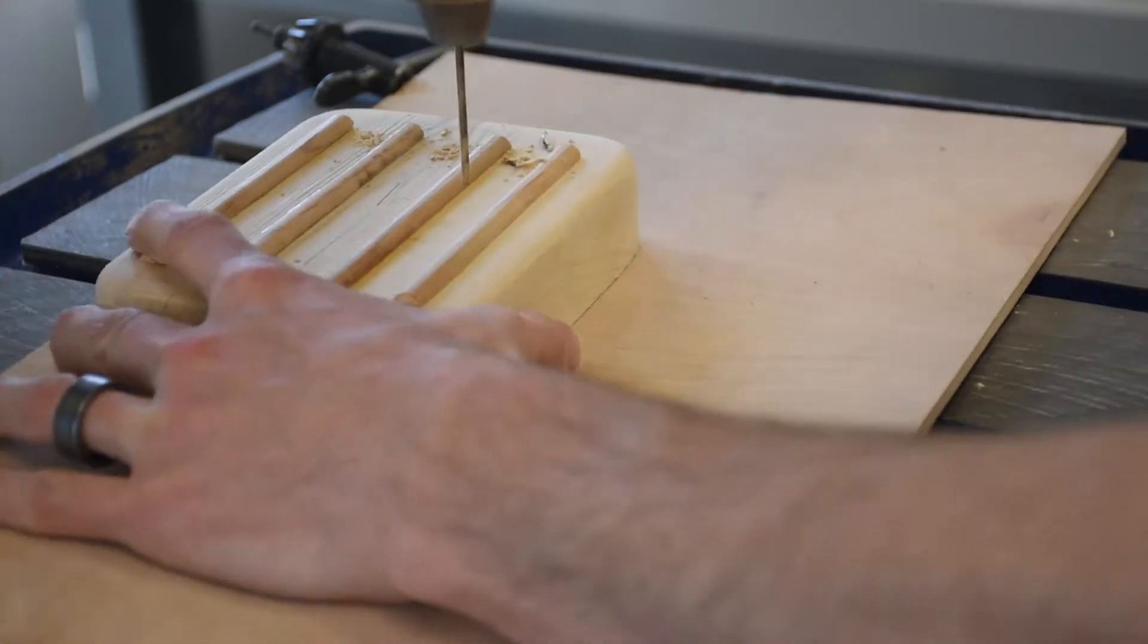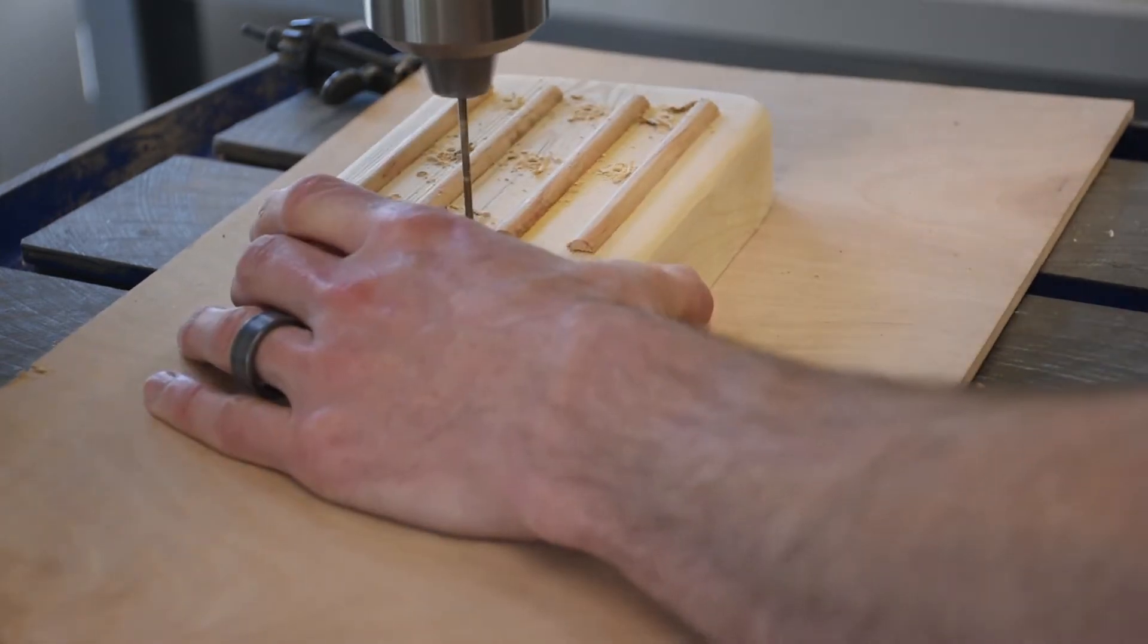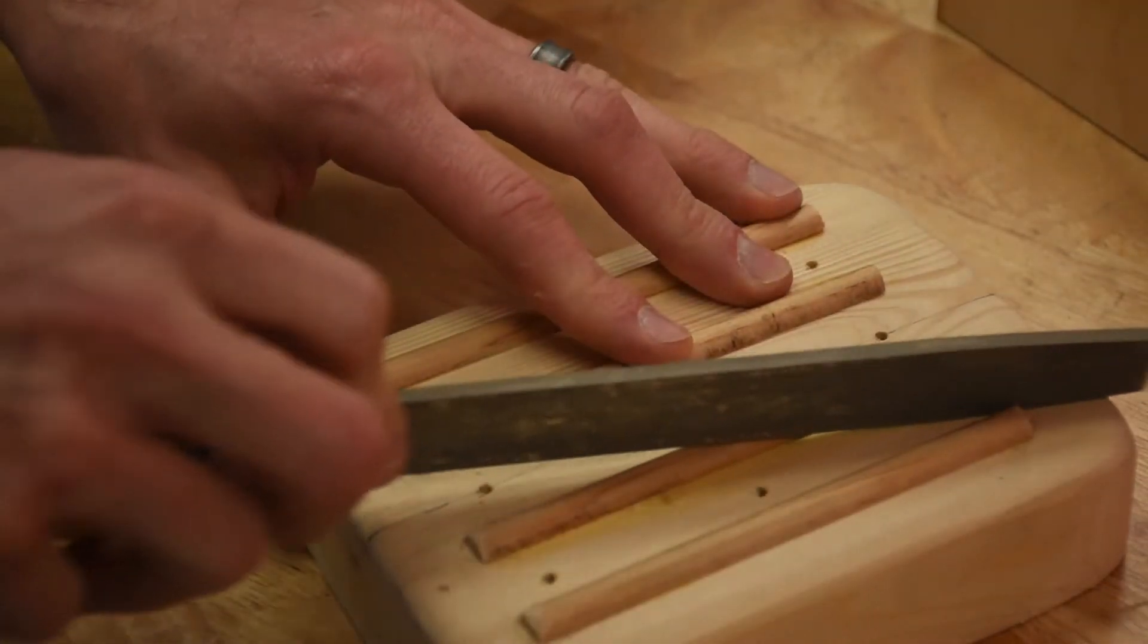Then I drilled a bunch of small holes through the mold to ensure that the plastic would get pulled tight. A final bit of corner rounding was all that was left.